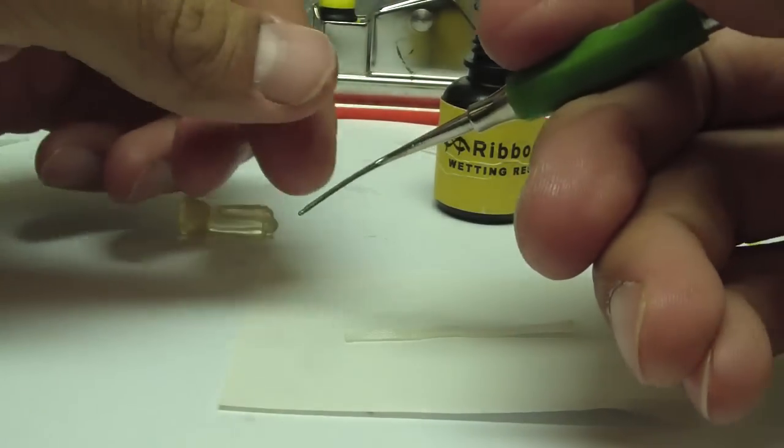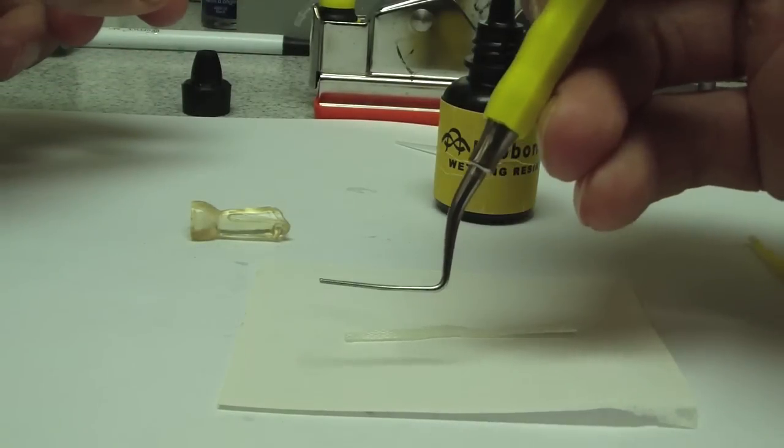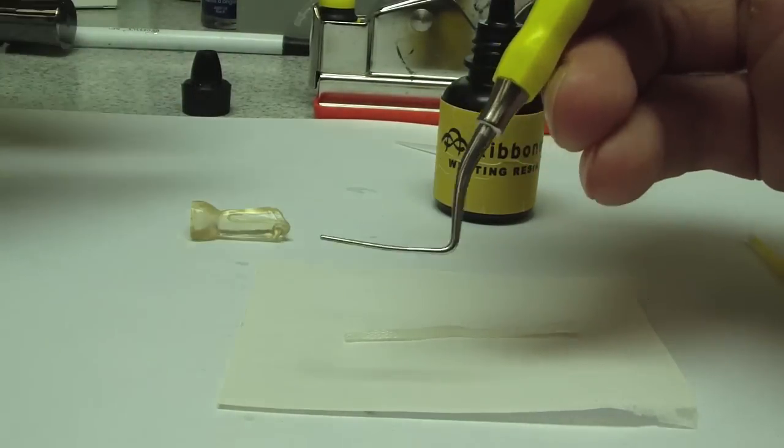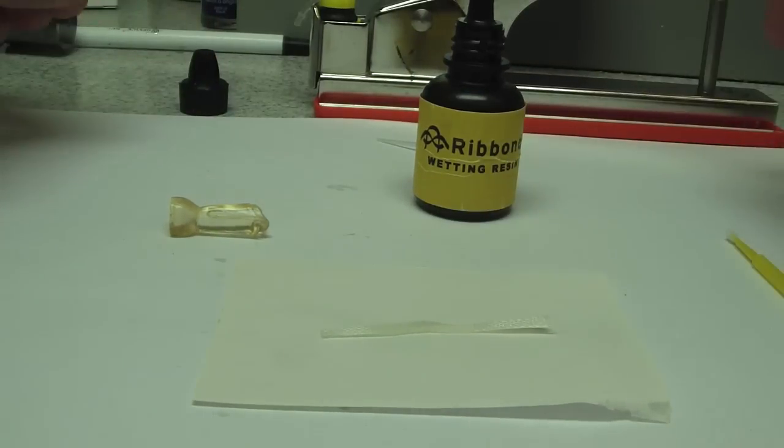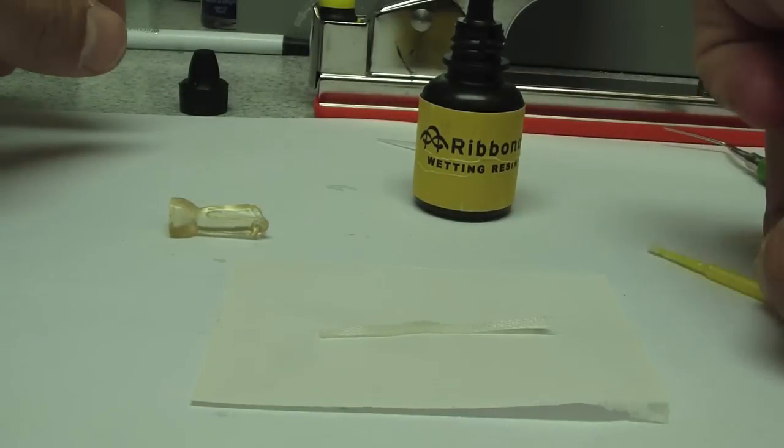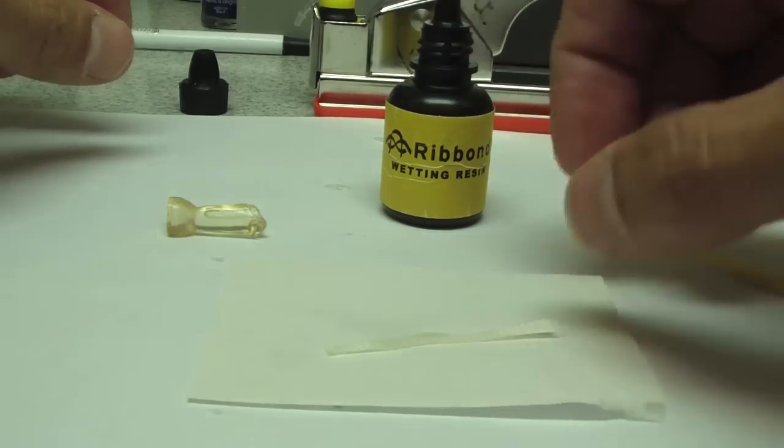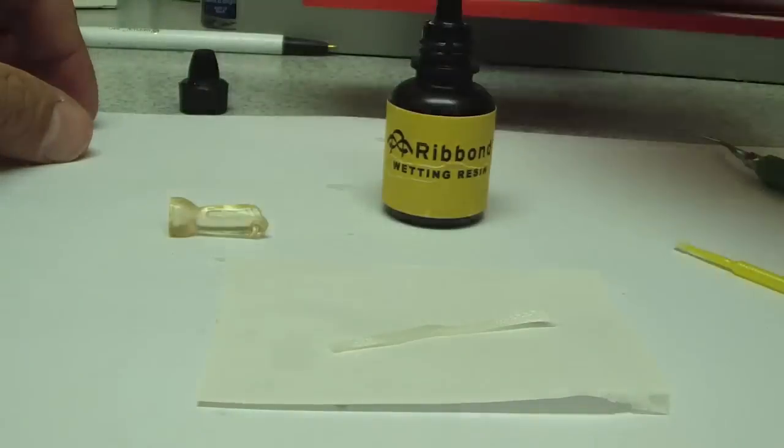Typically with a DT post or preformed post, the problem is that once it cures there's a bulk of resin which will shrink, so it's going to typically shrink away from either the wall or the post. I have a number of photos of my own experience of that using Relyx Unicem.